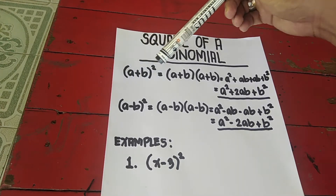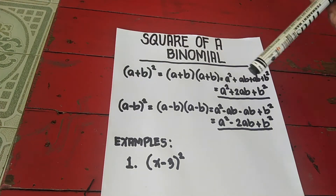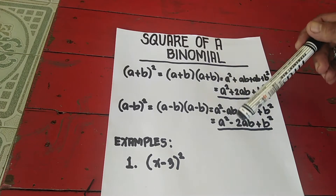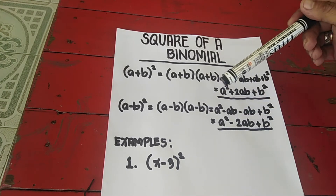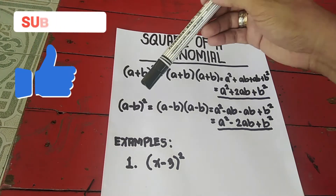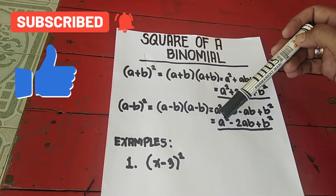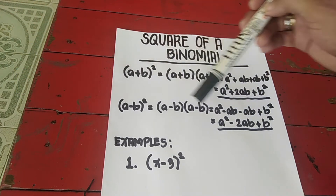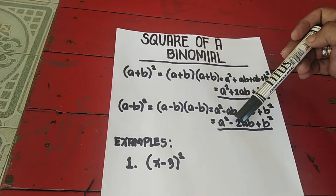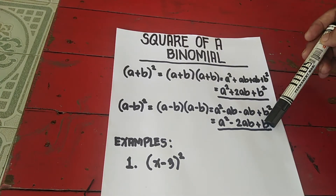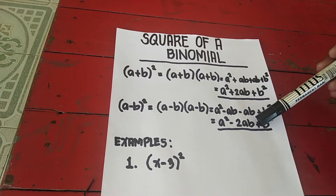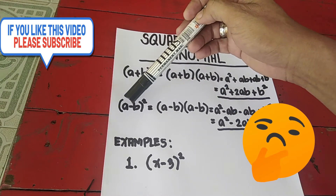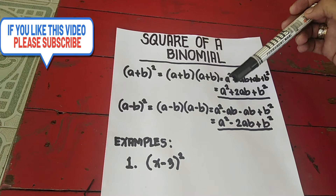This is the shortcut we will use for the square of a binomial. If the sign is minus, the same formula applies but the middle term is minus. So: square the first term to get a squared, multiply a times b times 2 to get 2ab, and the last term b squared is always positive. The sign of the middle term depends on the given — if plus, the middle term is plus; if minus, the middle term is minus.